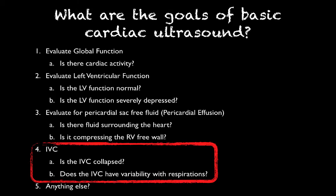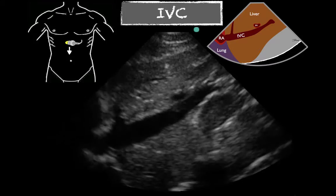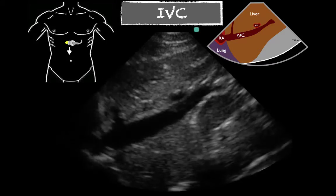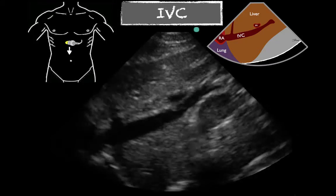Let's go ahead and start looking at IVC. Our first question is going to be: is the IVC collapsed? If the answer is no, then we're going to see does it have some variation with respirations. We'll see three examples here of just some respiratory variation.